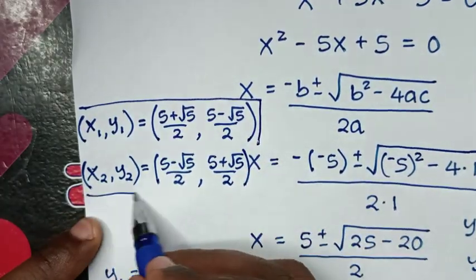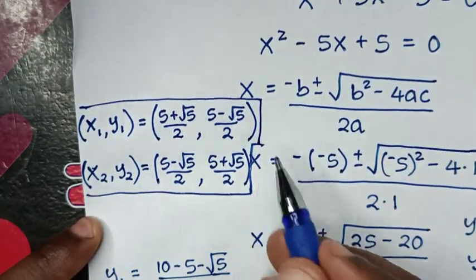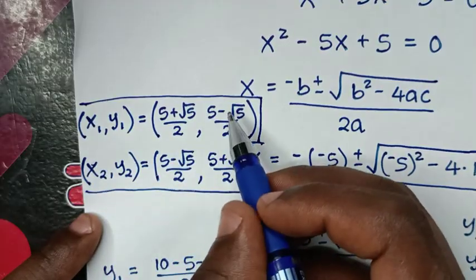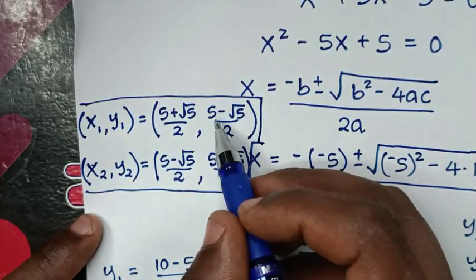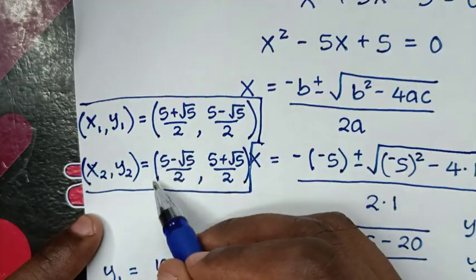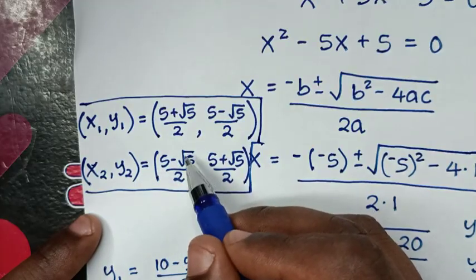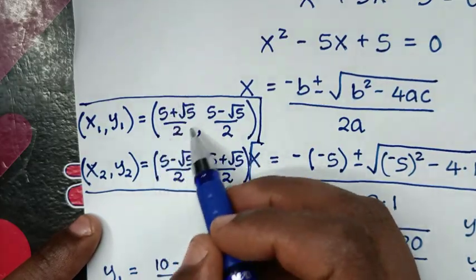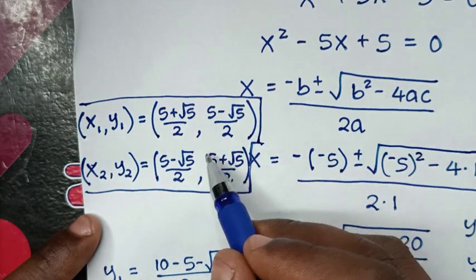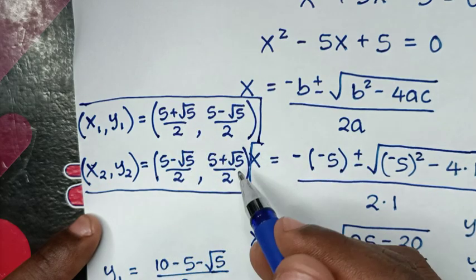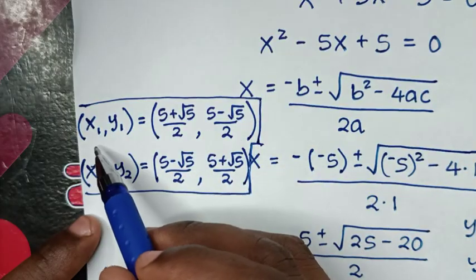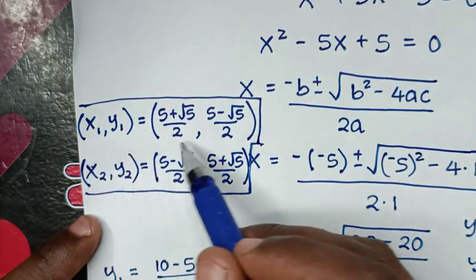We have two solutions to this problem. Notice that the value of y in the first solution is the same as the value of x in the second solution, and vice versa. Now let's verify these answers are correct using the first solution.